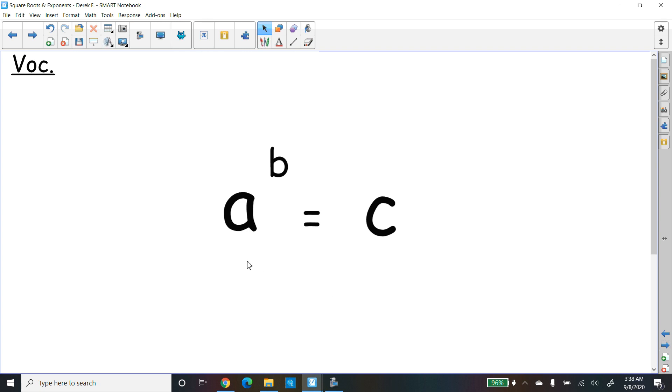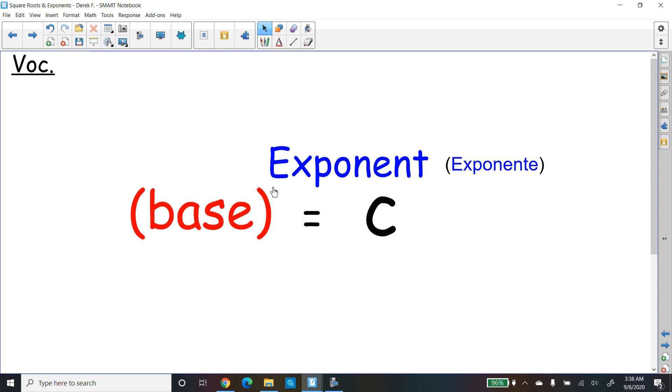All right, so our vocabulary. We have a to the b equals c. What are these letters called? So let's look at the a first. A is called the base. That's the big number on the bottom, it seems. There's a little b up here. What is that called? That's called the exponent. The exponent tells you how many times to write the big number. So it's in charge of the big number. So the exponent is a little number, the base is the big number.